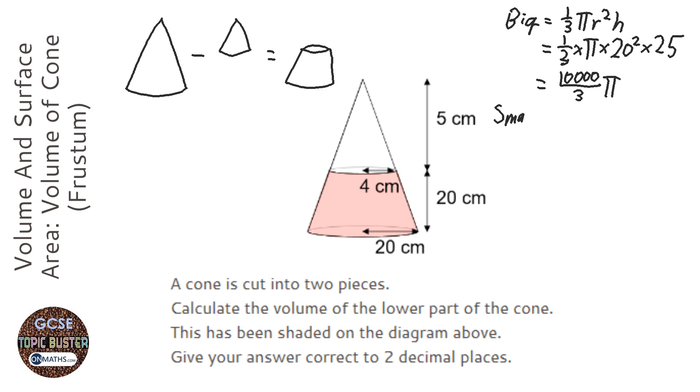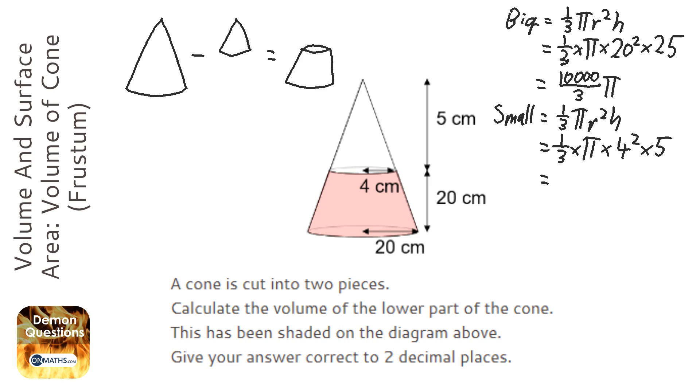For the small cone I am going to do the same thing again. 1/3 π r² h. This time it is 1/3 times π times, and the radius of the small one is 4. And the height of the small one is 5. So we are going to do this again but leave it in terms of pi. So we are going to do 4 squared times 5 divided by 3. Which is 80 over 3 pi.